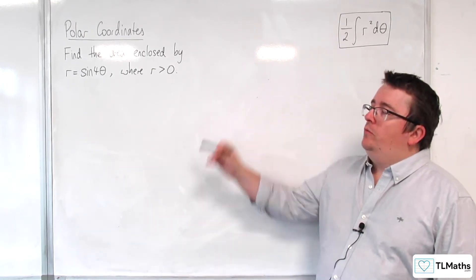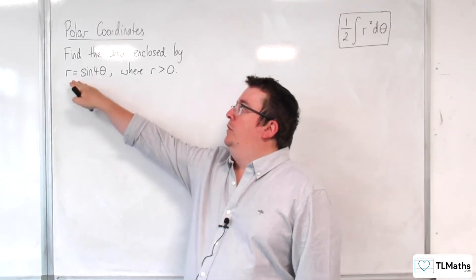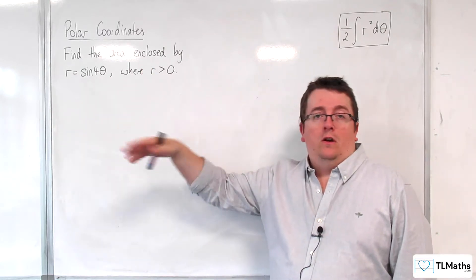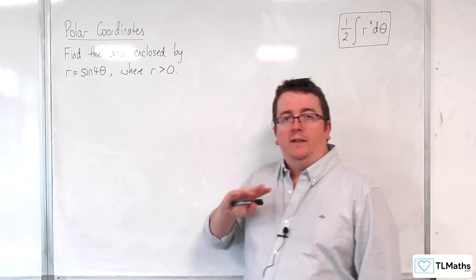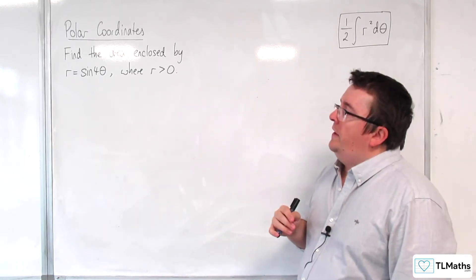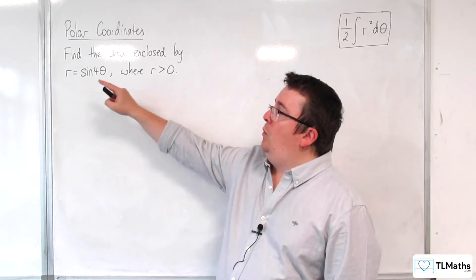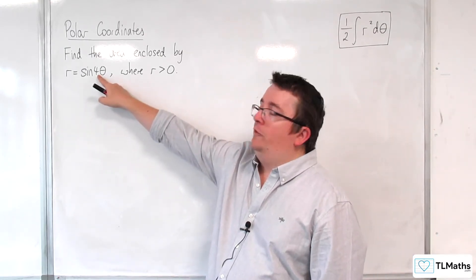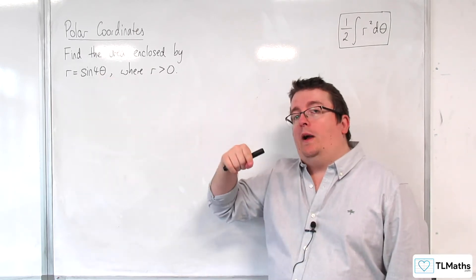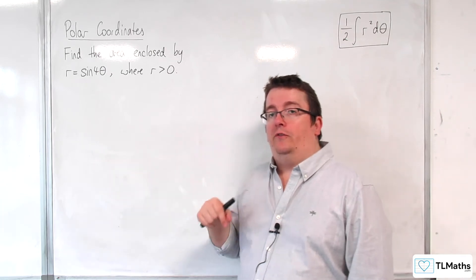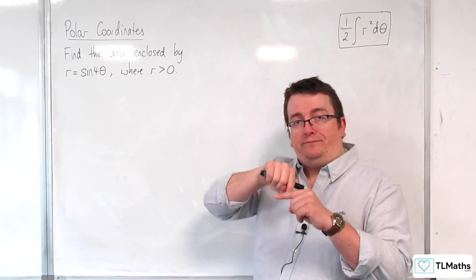Now, when we looked at rose curves, we looked at r equals cosine of 4 theta, for example. We found that when the multiplier, the coefficient of theta, is even, that means you had 2 lots of that number, so 2n lots of petals as you go around.